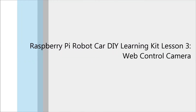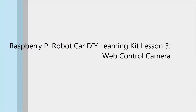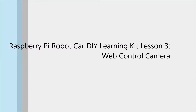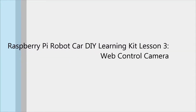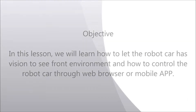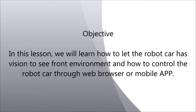Welcome to Raspberry Pi Robot Car DIY Learning Kit Lesson 3 – Web Control Camera. In this lesson, we will learn how to give the robot car vision to see the front environment and how to control the robot car through a web browser or mobile app.